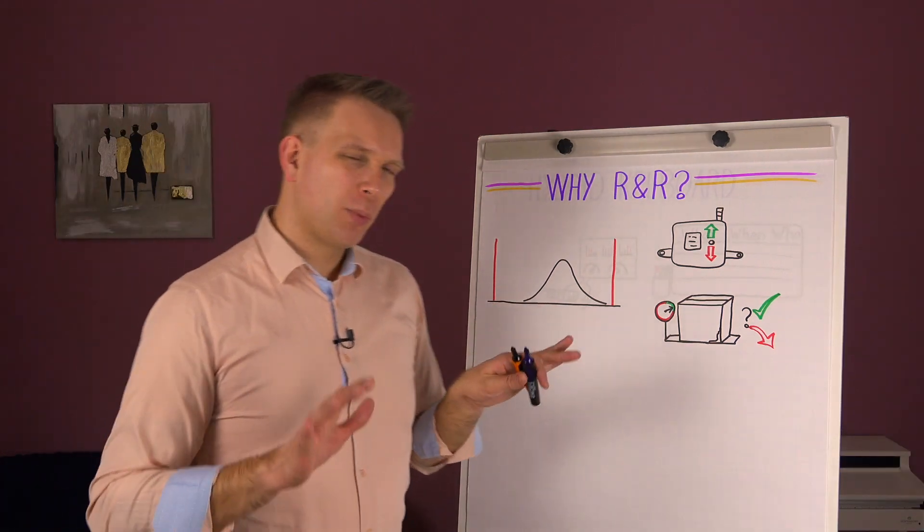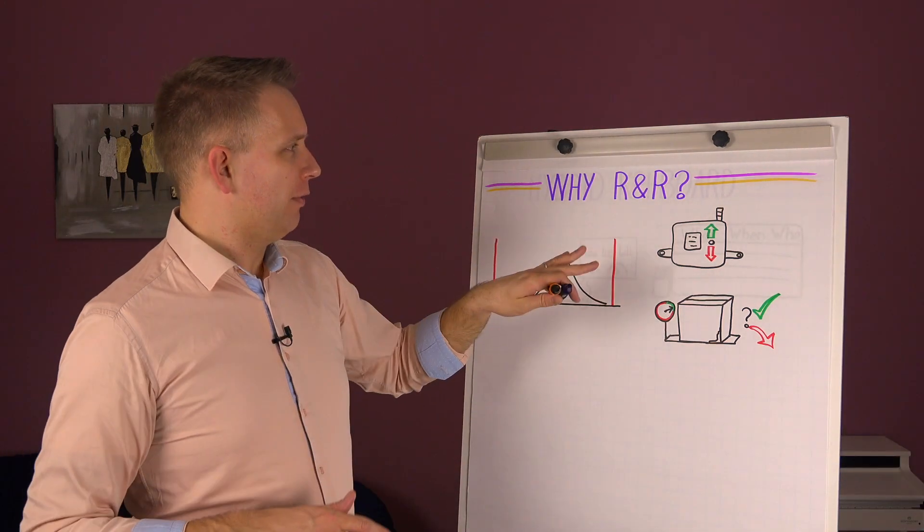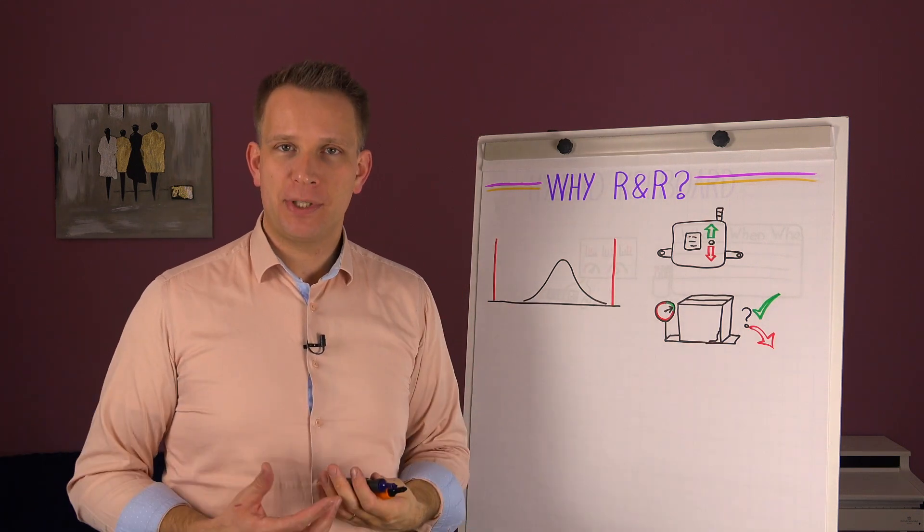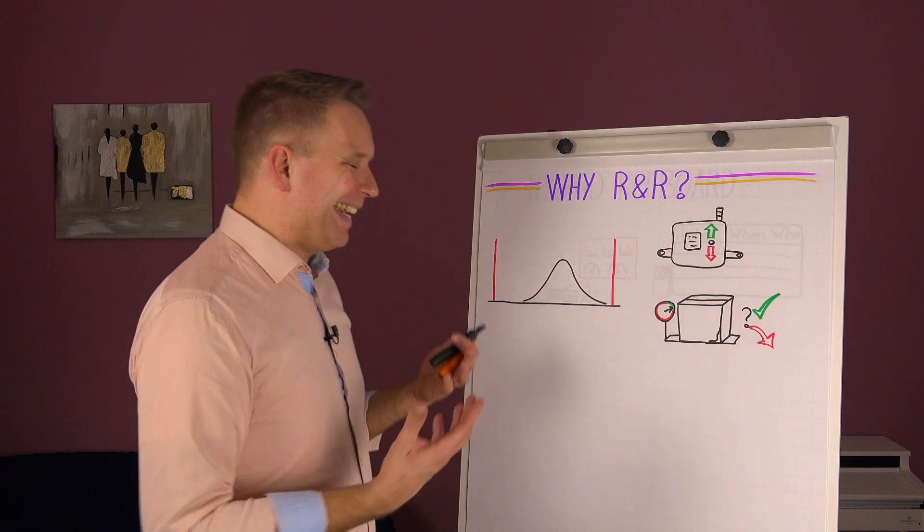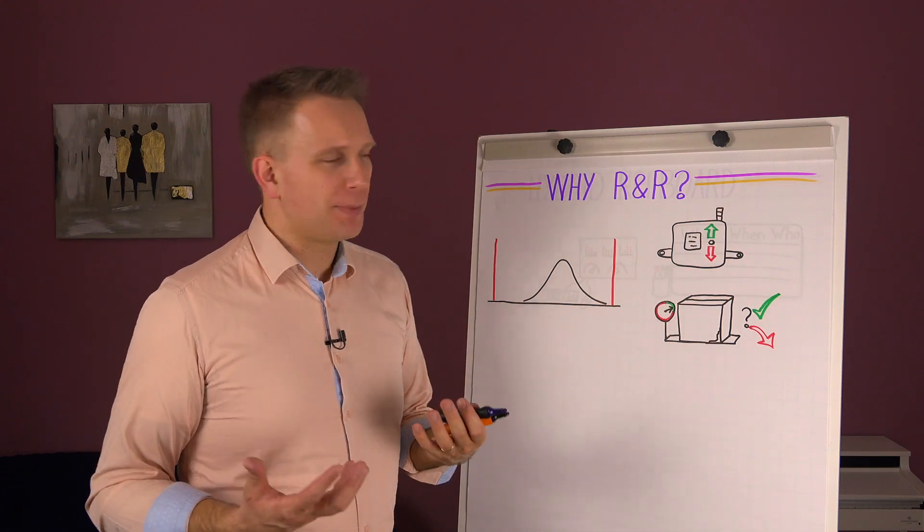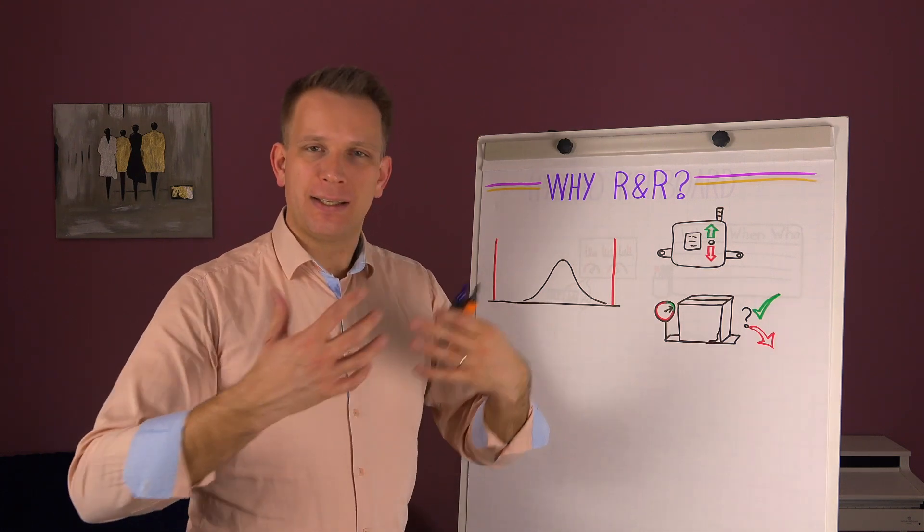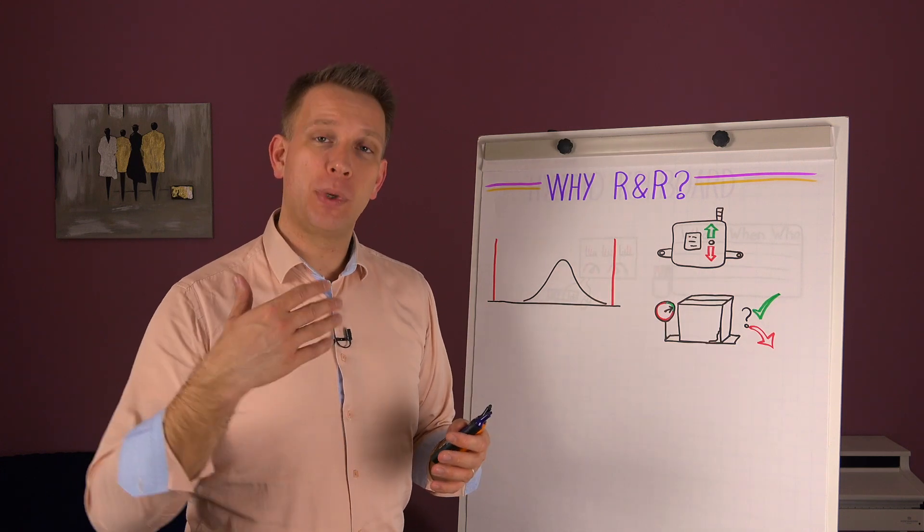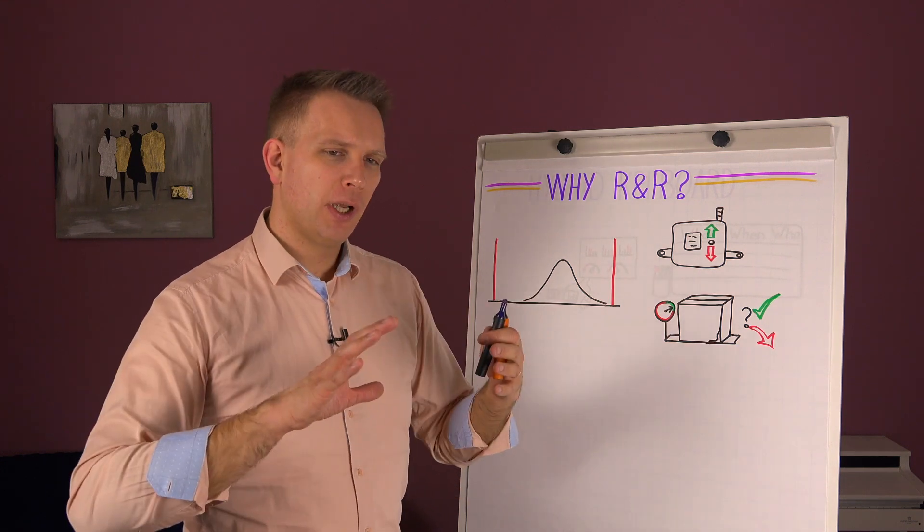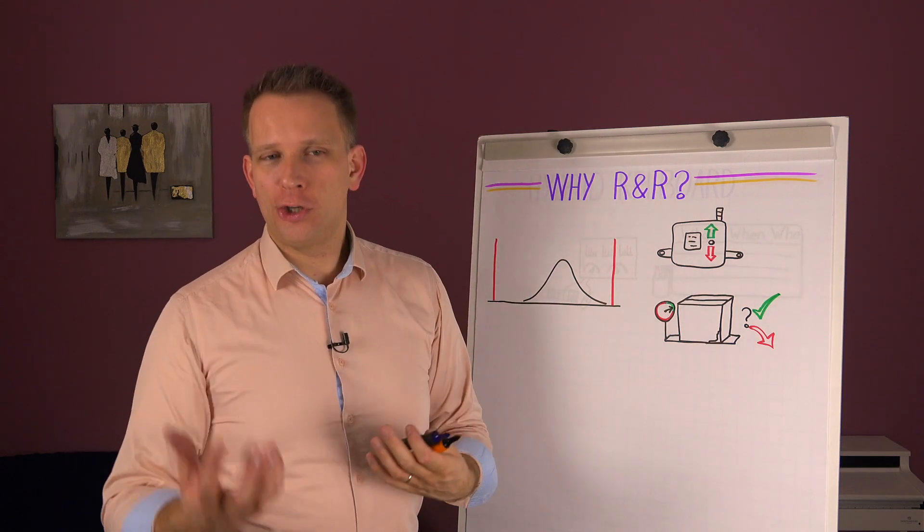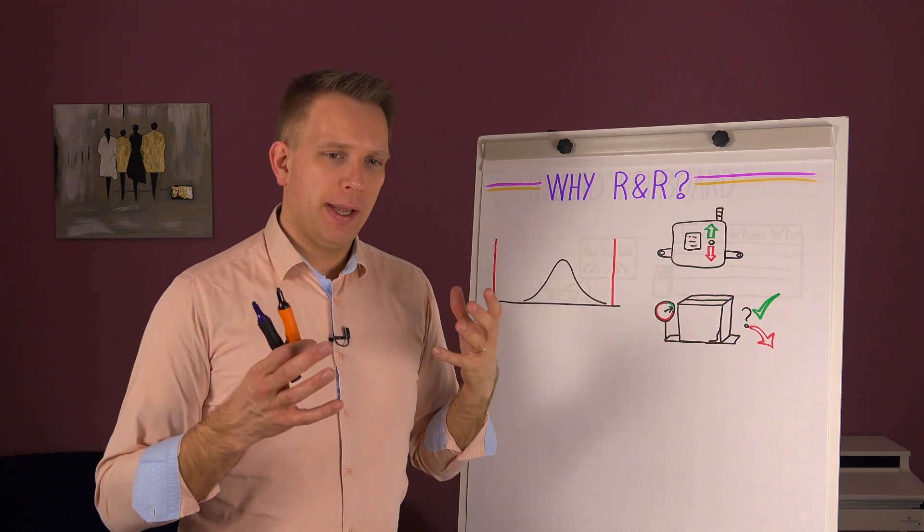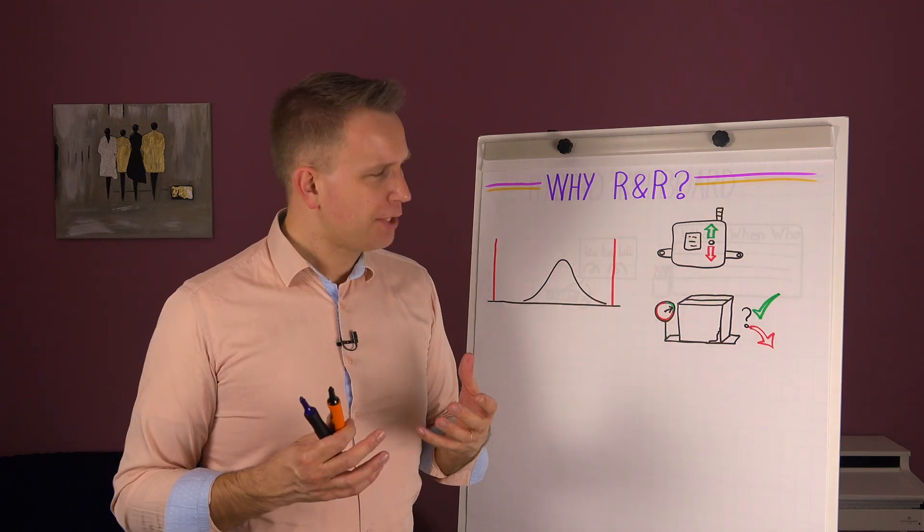So when we think about R&R, right, so repeatability, reproducibility, this is part of measurement systems analysis. In the end all of the measurement systems that we have, we get data information from our processes and we use that to decide whether or not to change things on the line, to increase or decrease settings, to make some changes to our production process.